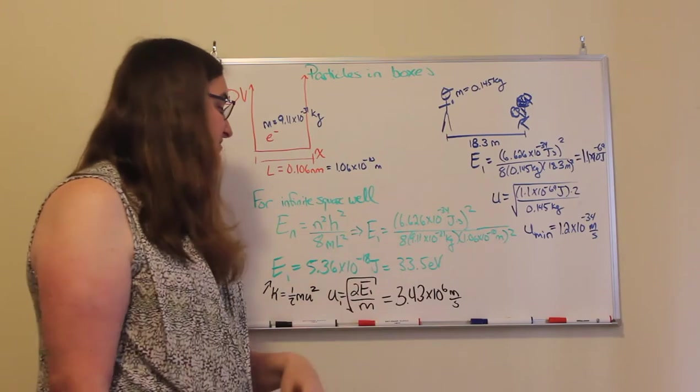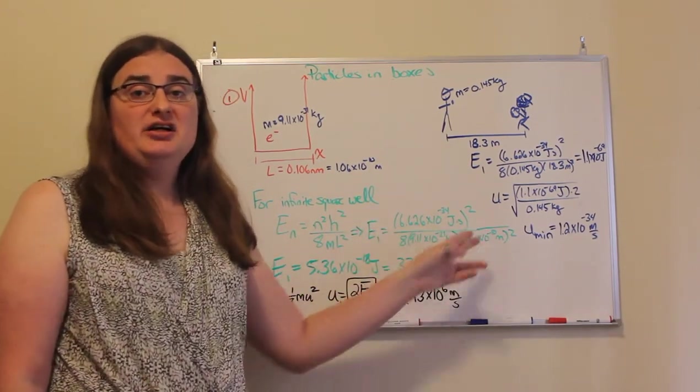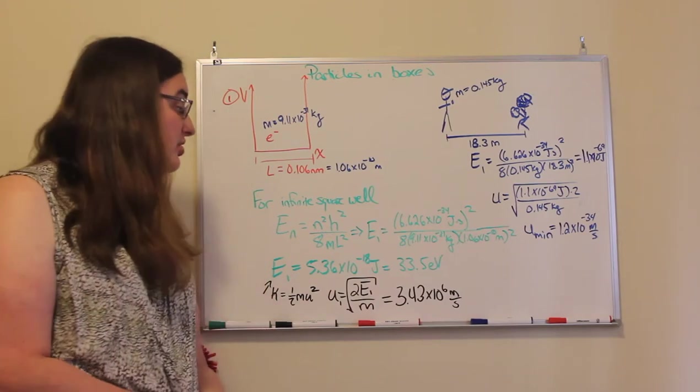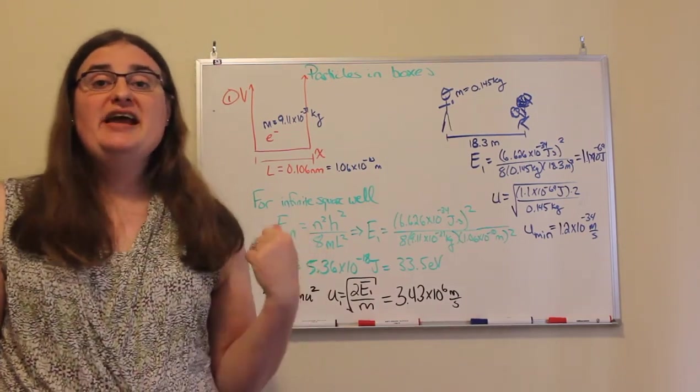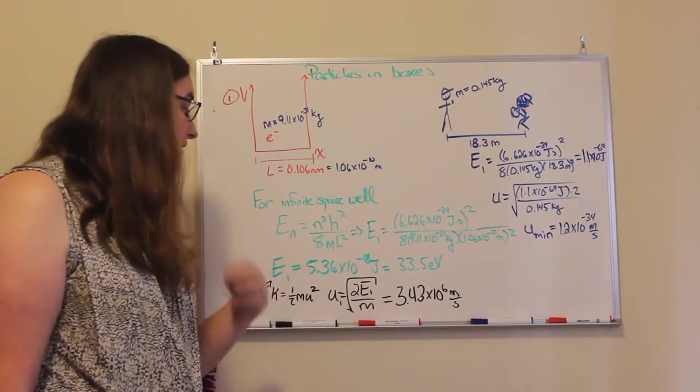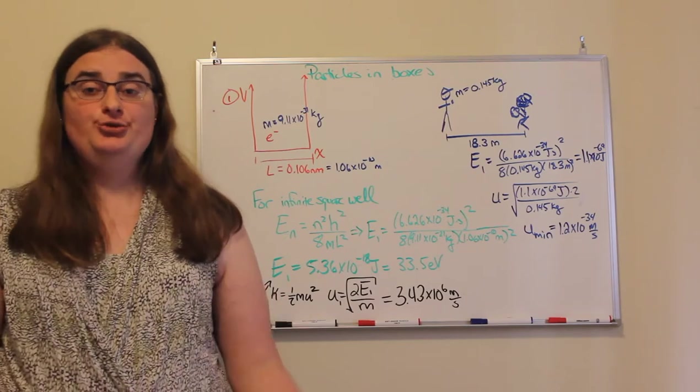So if I plug in Planck's constant, n equals 1, 8 mass of an electron, size of this box, I end up with a lowest energy in this system of 5.36 times 10 to the minus 18 joules.